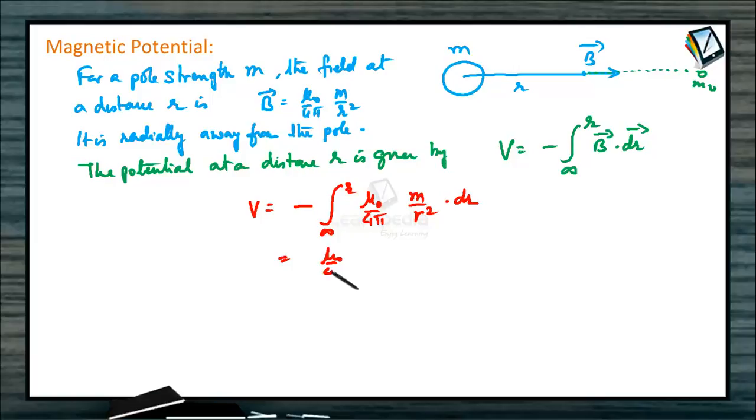So μ₀ by 4π—integration 1 by r square into dr is minus 1 by r. So this will be M by R.